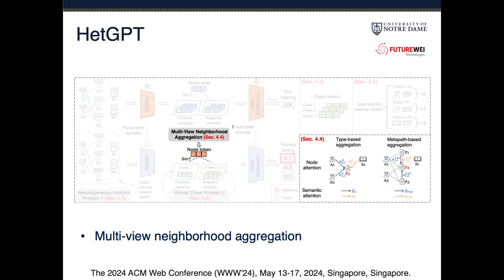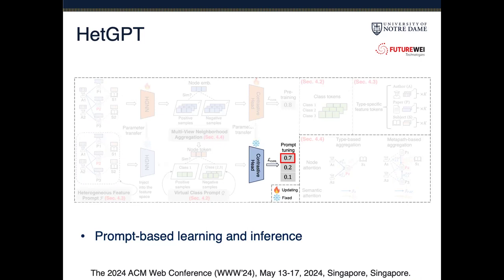Then, we have the multi-view neighborhood aggregation, which utilizes the homogeneous neighborhood information of the target node. Finally, we tune the prompts.